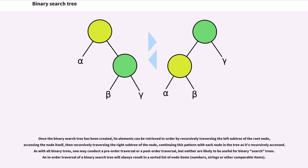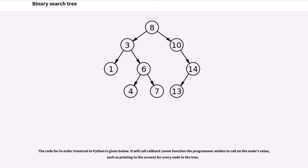Once the binary search tree has been created, its elements can be retrieved in order by recursively traversing the left subtree of the root node, accessing the node itself, then recursively traversing the right subtree of the node, continuing this pattern with each node in the tree as it's recursively accessed. As with all binary trees, one may conduct a pre-order traversal or a post-order traversal, but neither are likely to be useful for binary search trees. An in-order traversal of a binary search tree will always result in a sorted list of node items, numbers, strings, or other comparable items. The code for in-order traversal in Python is given below. It will call callback, some function the programmer wishes to call on the node's value, such as printing to the screen, for every node in the tree.